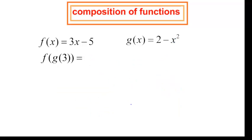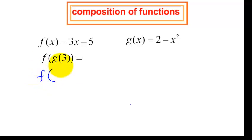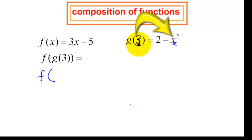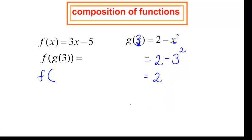Let's try another one. I want to find f at g at 3. I am going to bring down my f function and g at 3. Wherever I see x, I now replace x with 3. So I have 2 minus 3 squared. The negative is not in parentheses with this 3, so only the 3 is squared. That would be 2 minus 9, which is negative 7.